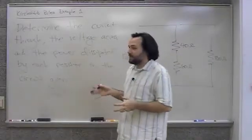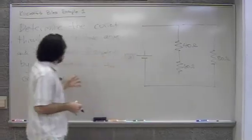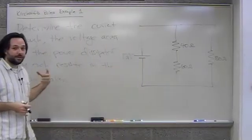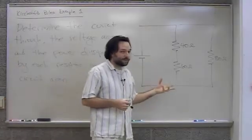So here we have our first example that we're going to work using Kirchhoff's rules. What we're doing here is determining the current through, the voltage across, and the power dissipated by each one of the resistors in this circuit.